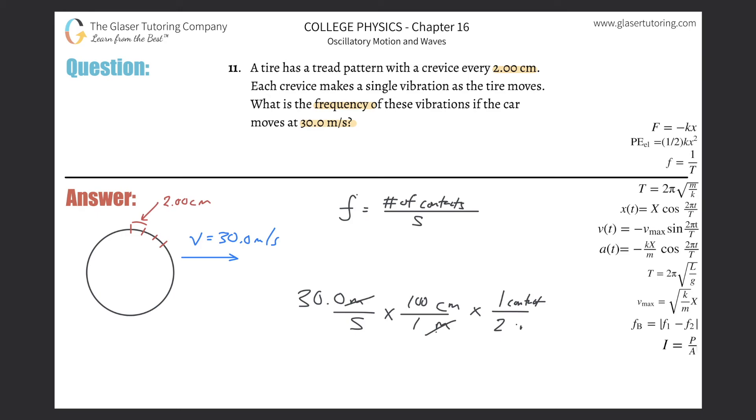Notice if the units cancel this way, I'm basically left with contacts per second. Number of contacts per second because it's basically number of vibrations per second—it's the same thing. So that's it, this is all it is. It's basically 3,000 divided by 2, which works out to be 1,500.